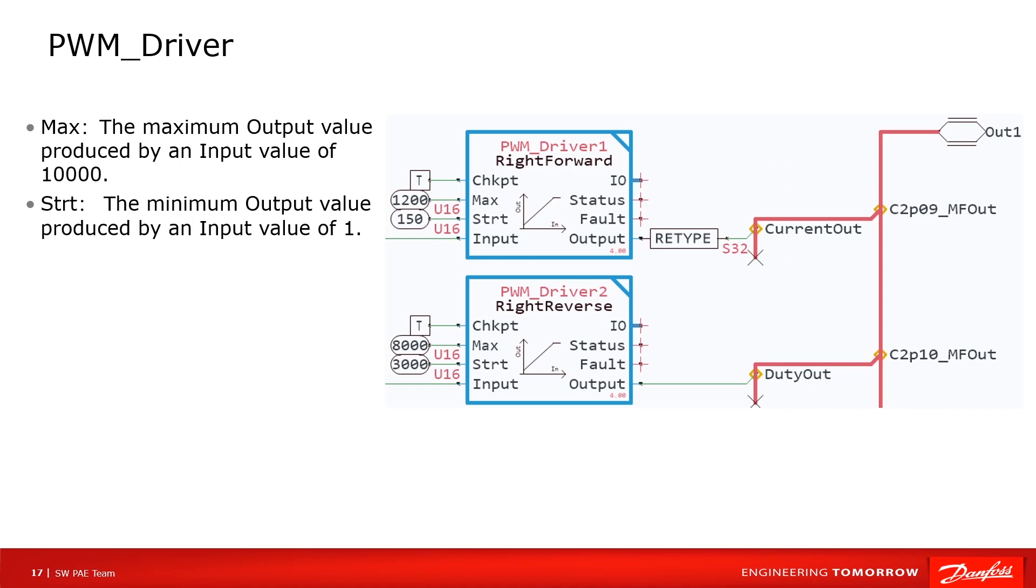Next function block, let's take a look at the PWM_Driver. This is an output function block. It converts data from 0 to 10000 into desired current, voltage, duty, or other output signals.